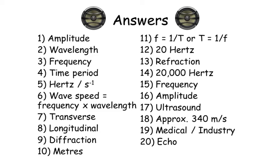Number ten: meters. Number eleven: frequency equals one over time period, or time period equals one over frequency. Number twelve: twenty hertz.